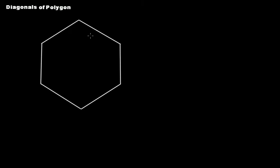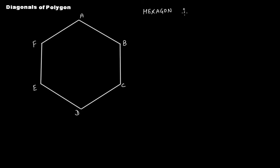This is a six-sided polygon and it is called a hexagon. Let's name all the vertices a, b, c, d, e, and f. Now let's name all the non-consecutive vertices.